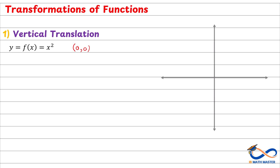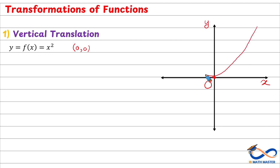If we graph this, here we have the origin (0, 0), the x-axis and the y-axis. So if we graph the parabola, it will be here. This is the graph of the quadratic y equals x squared, and it passes through the origin.